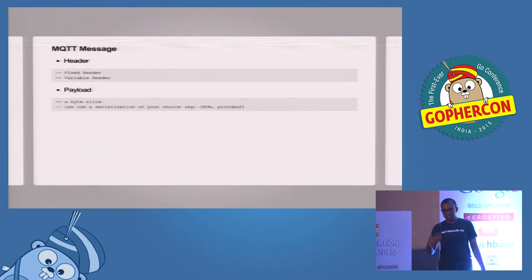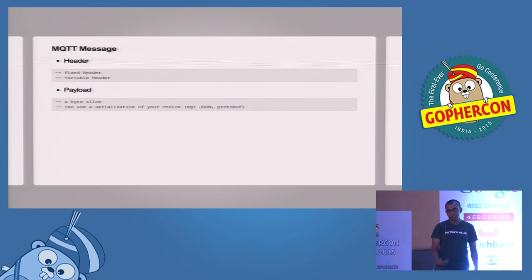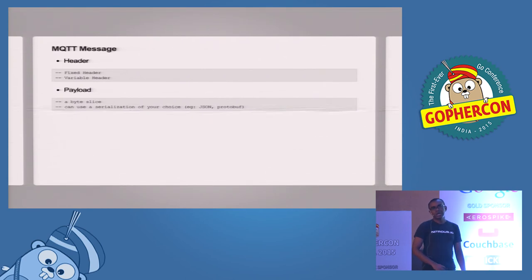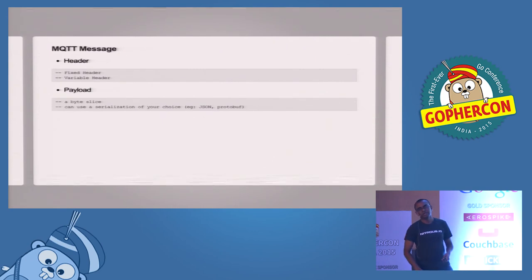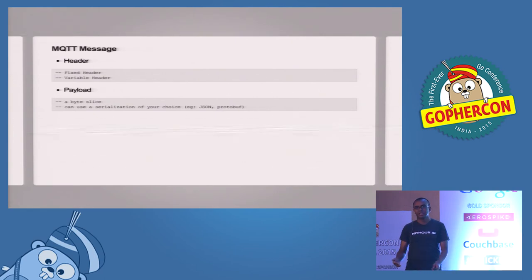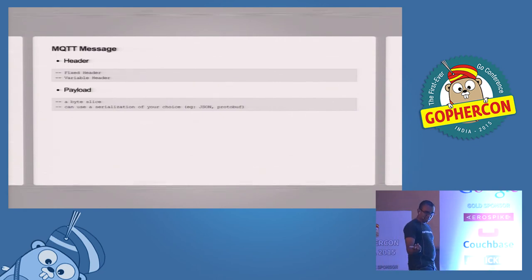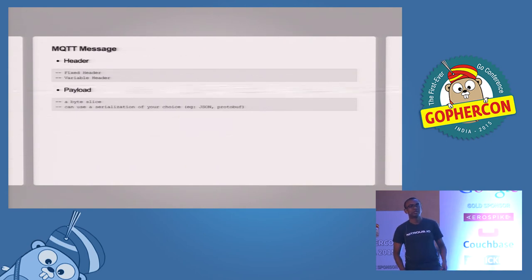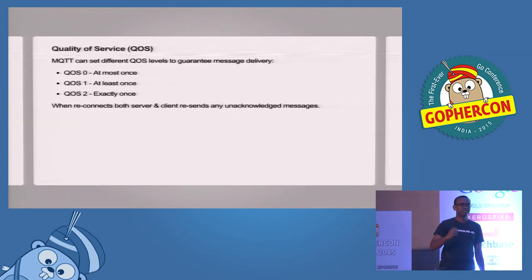The message structure has a header and a payload. The protocol is pretty lightweight — the fixed header is about two bytes, and depending on the type of message there's a variable header that can contain multiple things, such as a will message in the connect case. The payload is basically a byte slice, and in that byte slice you can put serialized JSON, protobuf, or even a primitive data type. You can send anything through this byte slice.